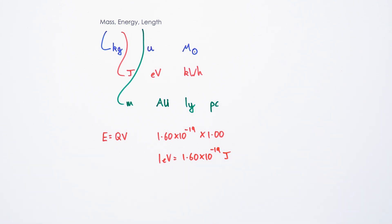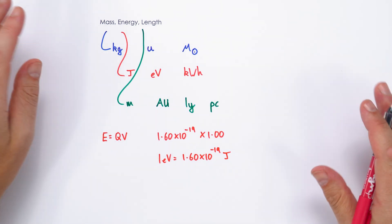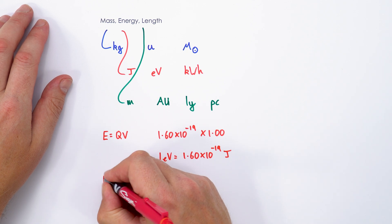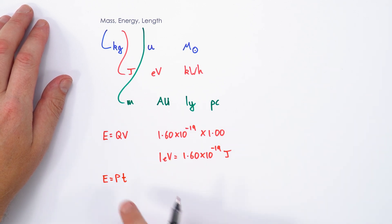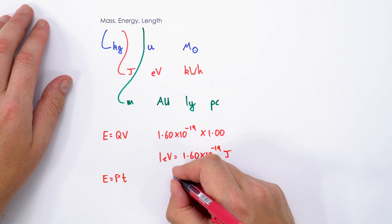When it comes to looking at kilowatt hours, we know that energy is equal to power times time, and the power for a kilowatt hour would be a thousand watts.